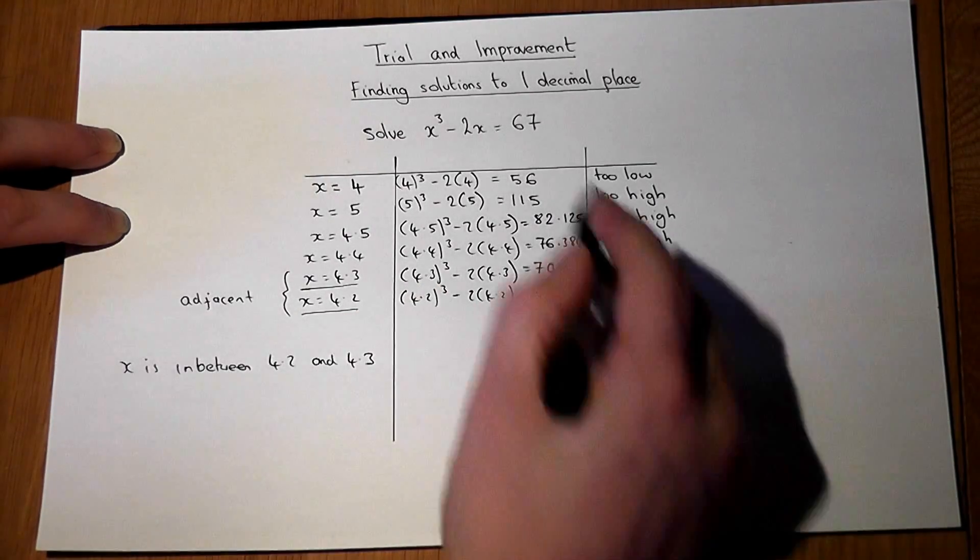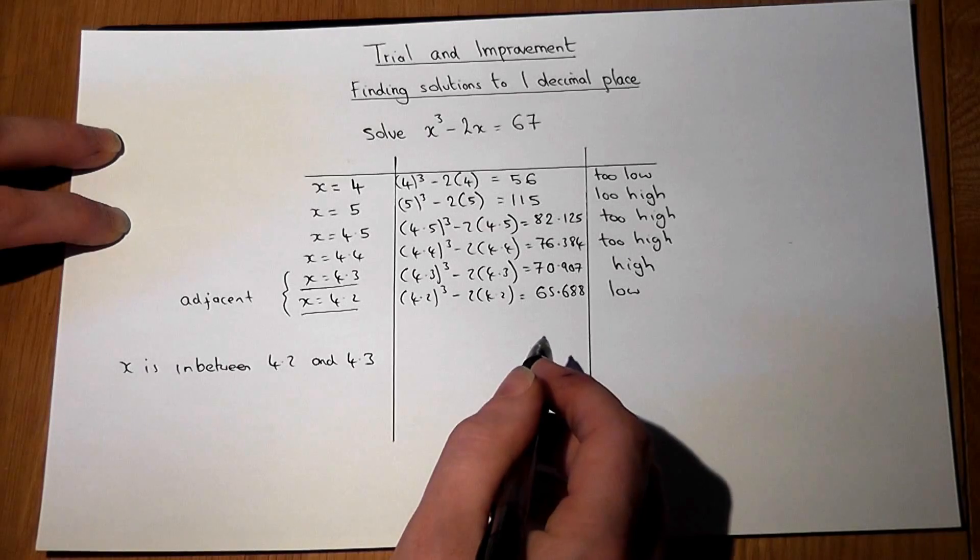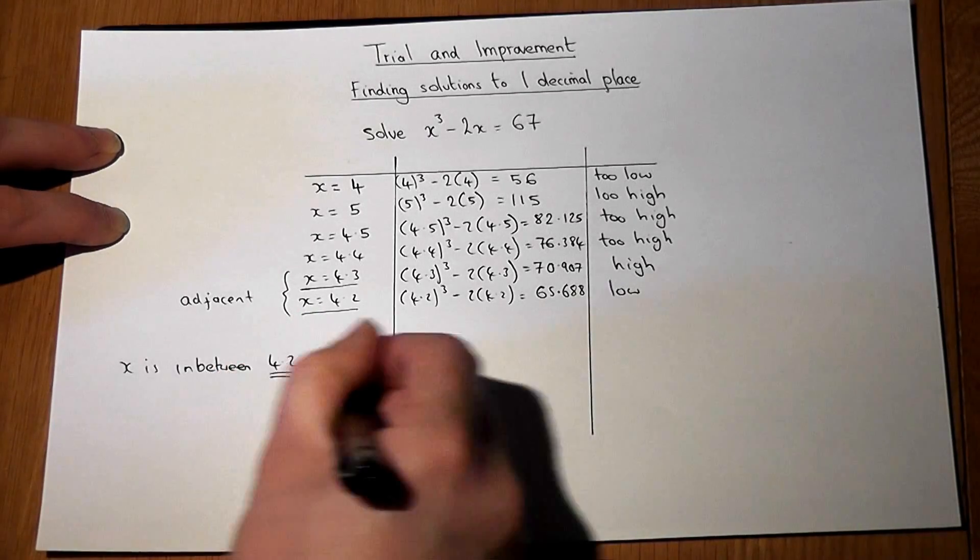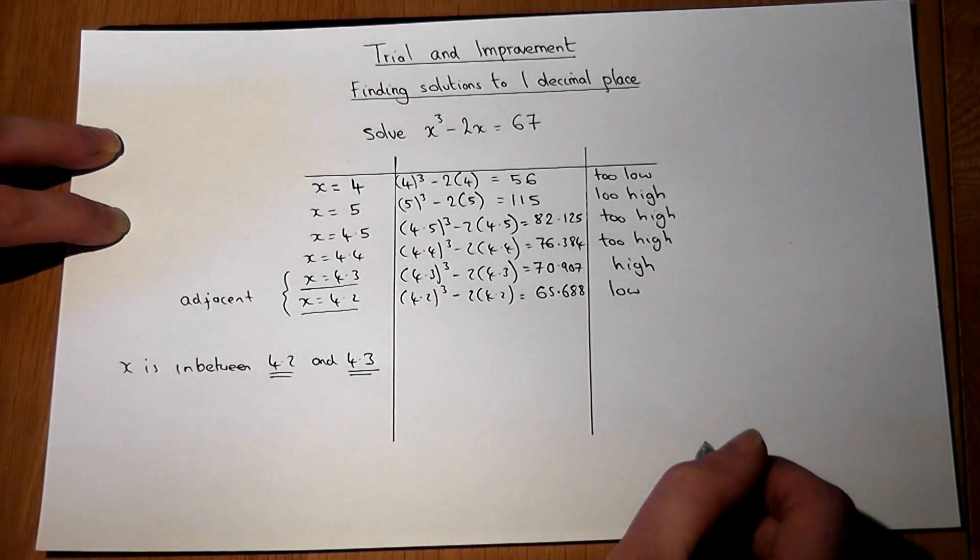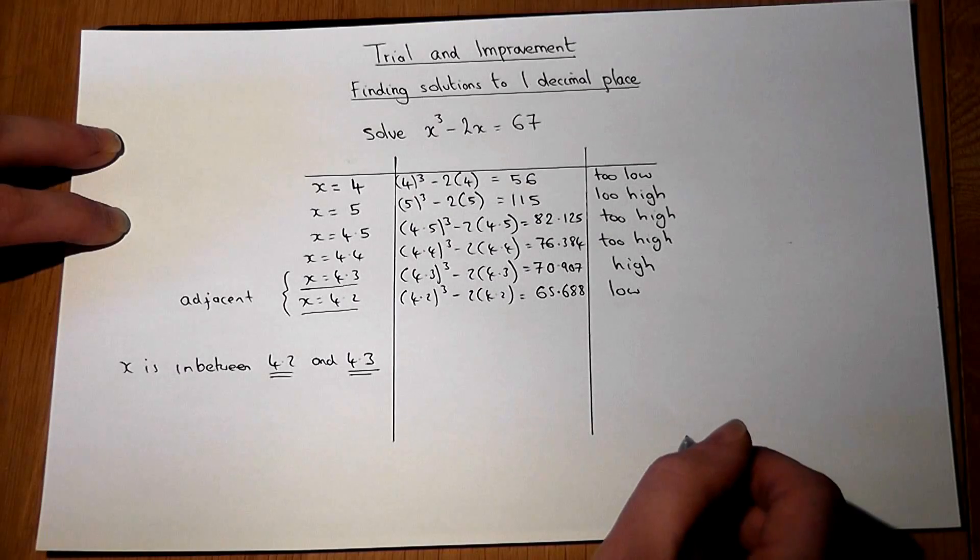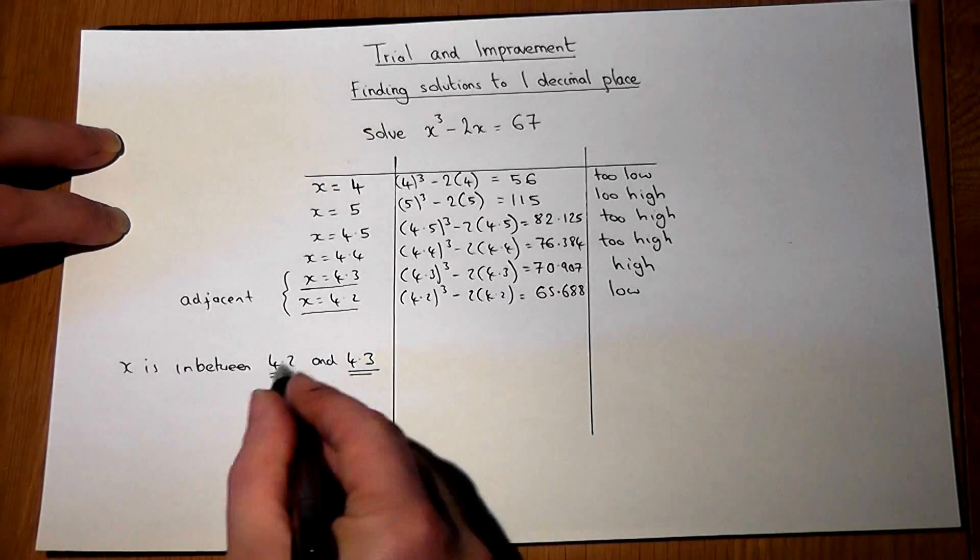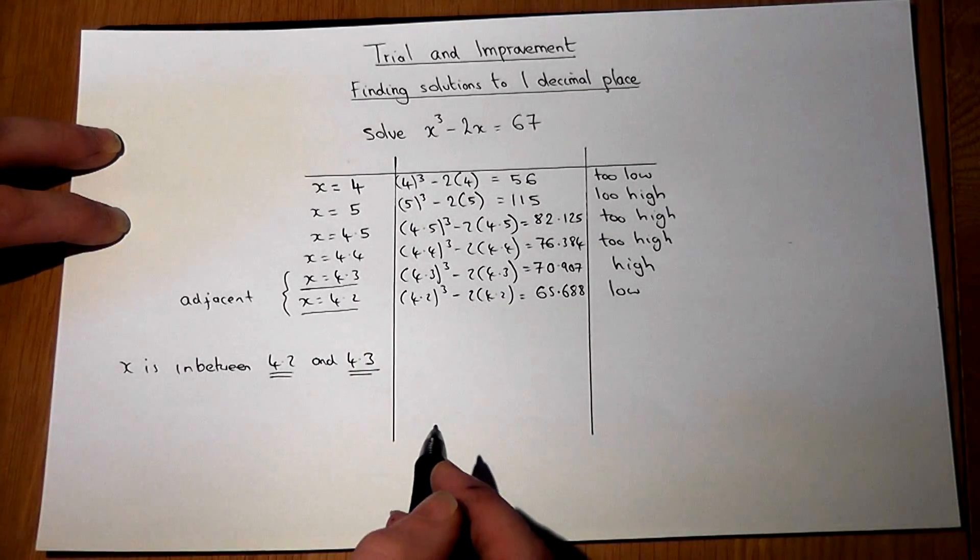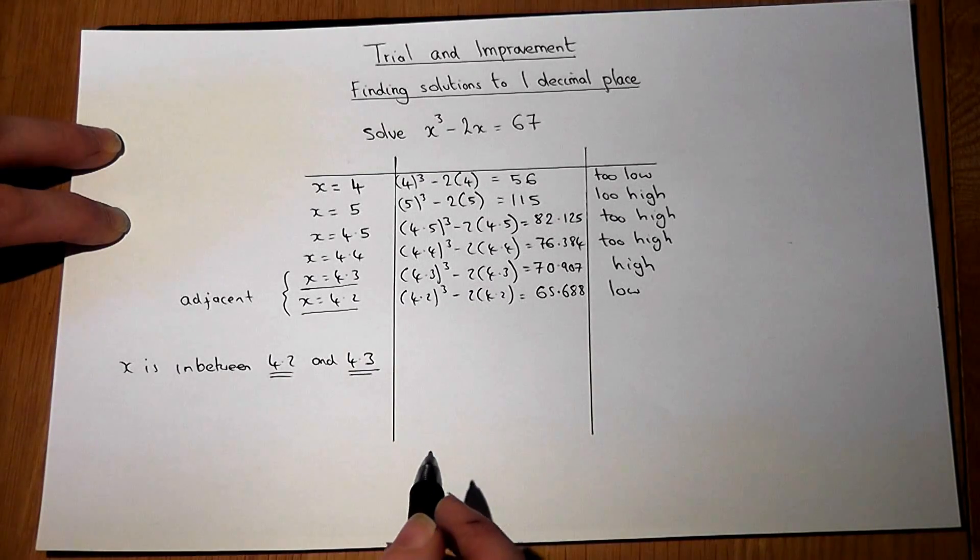Now we only want x to 1 decimal place, so we have to choose x to be either this solution or that solution. And what we do is we now do a check in between these two values to ascertain which of these it is.